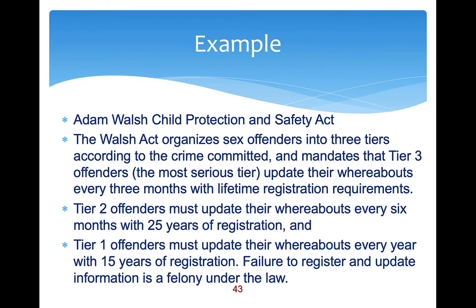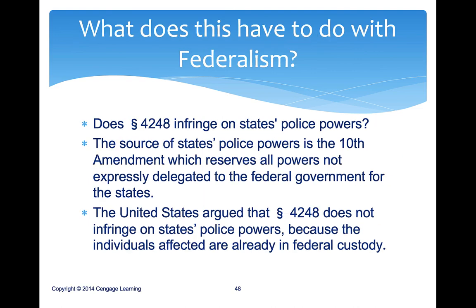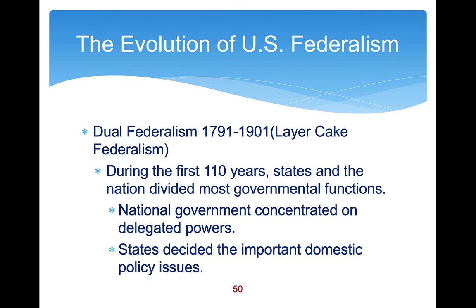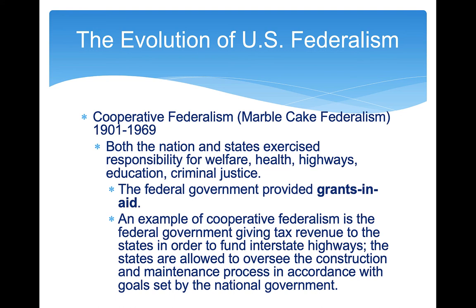The United States argued Section 4248 doesn't infringe on state police powers because these individuals are already in federal custody. The law was found to be rationally related and reasonably adapted to execute an enumerated power — specifically, offenses against the law of nations. Now let's talk about the evolution of federalism. Dual federalism, from 1791 to 1901, was called layer cake federalism. During the first 110 years, states and the federal government divided most powers — the national government focused on delegated powers while states handled domestic policy.